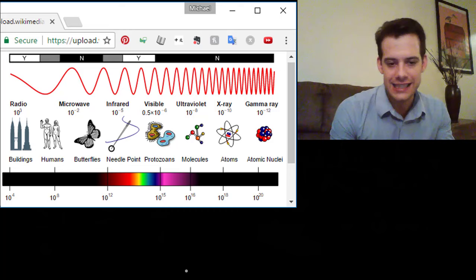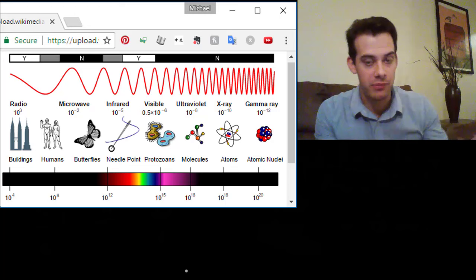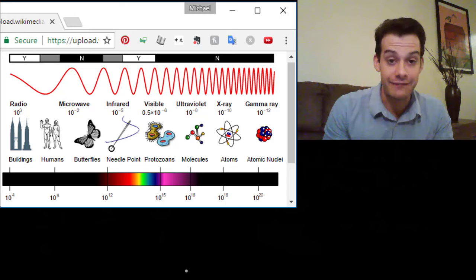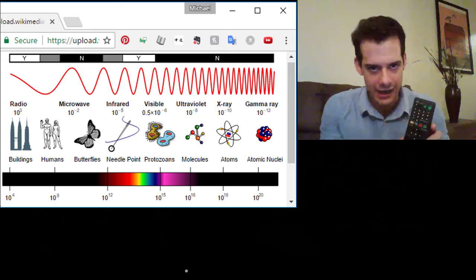So within this visible spectrum we can see certain types of light. Actually I want to show you a demonstration of infrared. So we can't see infrared light but we can create devices that would convert infrared light into visible light. In fact you have one of these in your house right now if you have a remote control.